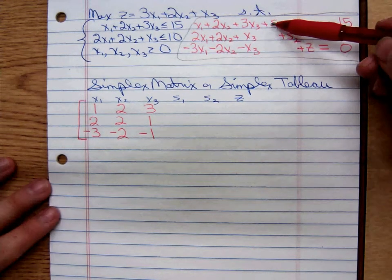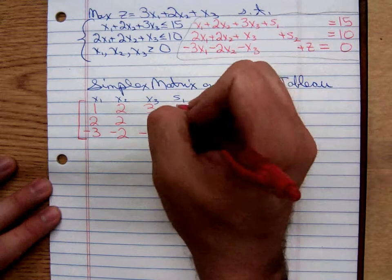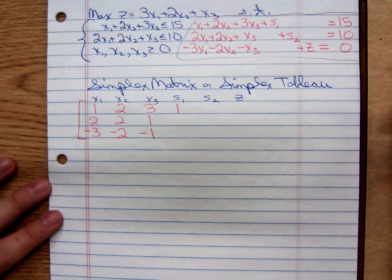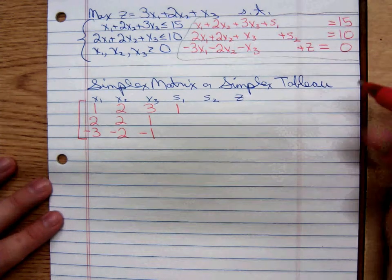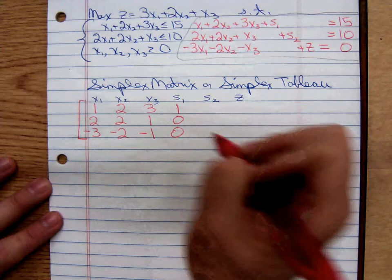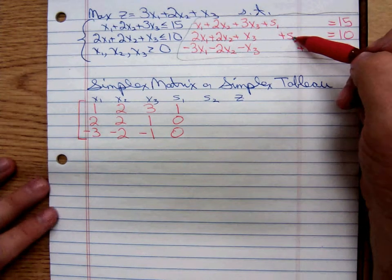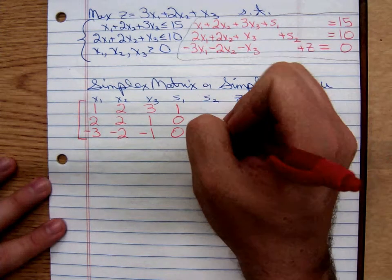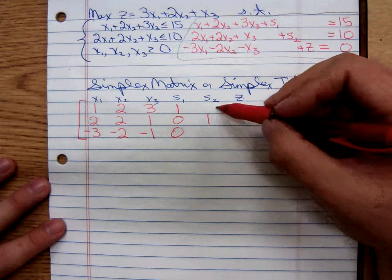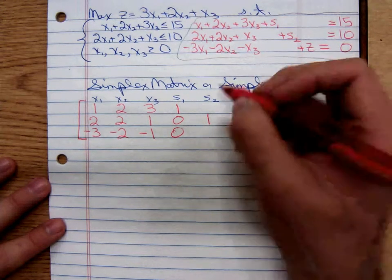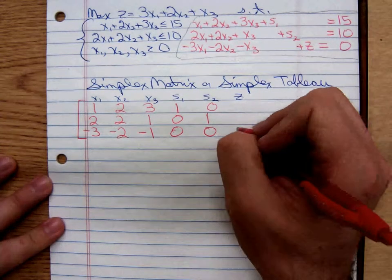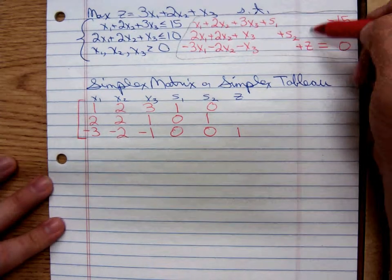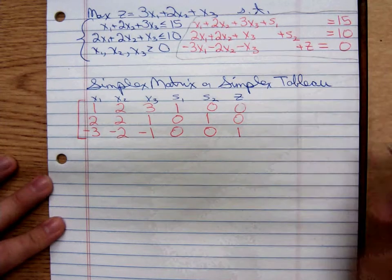For slack 1, we have one in the first row. How many do we have in the other two rows? None. For slack 2, we have one in row 2. What have we got here and here? Nothing. And finally, we have one z in row 3. And the other two rows, no z's.